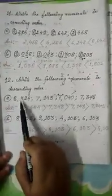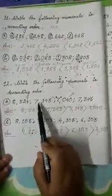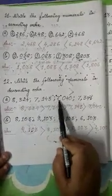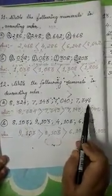Now let us move to our next question, question number 12: Write the following numerals in decreasing order. Here you have to arrange the numerals in decreasing order — that means from bigger to smaller. So let us do it. Number A: 8324, 7143, 7040 and 7343.